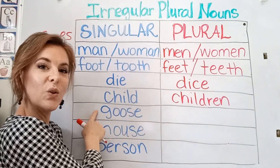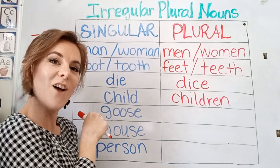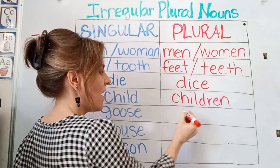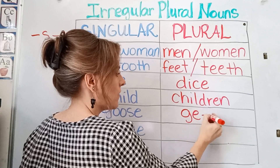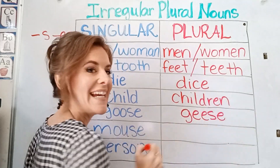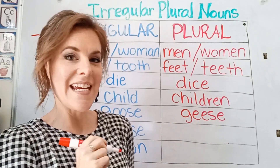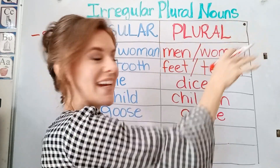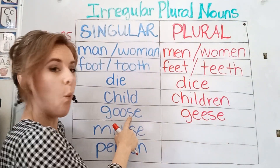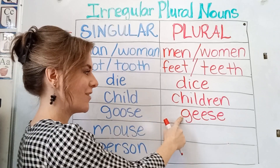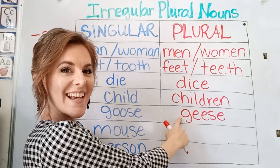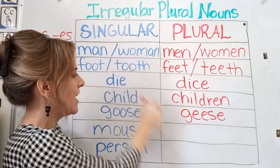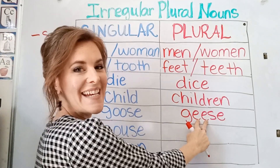Here we have goose. I saw a goose fly ahead. If you are going to have more than one, it is geese. The geese flew above me. So one goose, two or more geese. We are changing the double O's again to double E's.